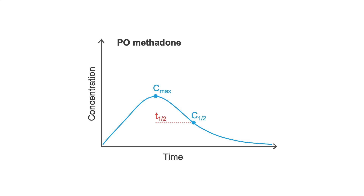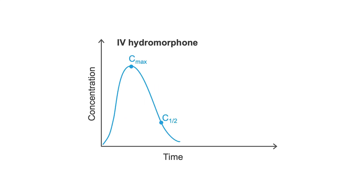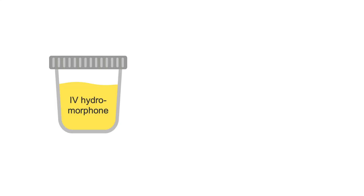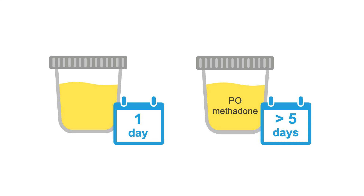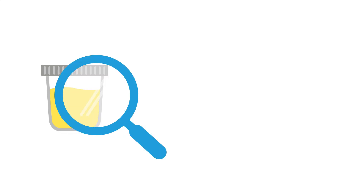Oral methadone has a half-life of nearly 24 hours, while IV hydromorphone has a half-life of only 2-3 hours. Thus, you could expect evidence of a dose of IV hydromorphone to disappear from the urine entirely within a day or so, while oral methadone could linger in the urine for five days or more, particularly in patients with higher maintenance doses or those with liver or kidney disease. While this is only a very general rule, you can guesstimate how long a drug might be detectable in the urine by multiplying its half-life by 5.